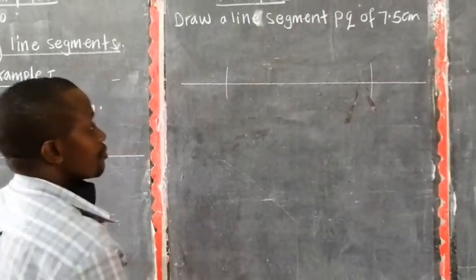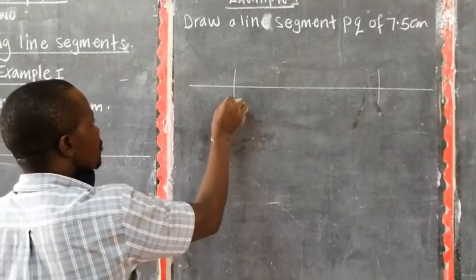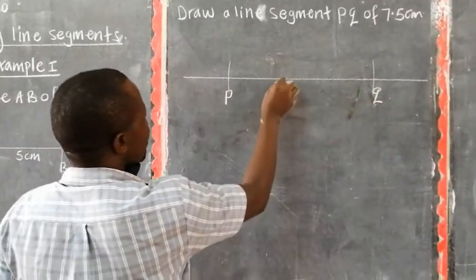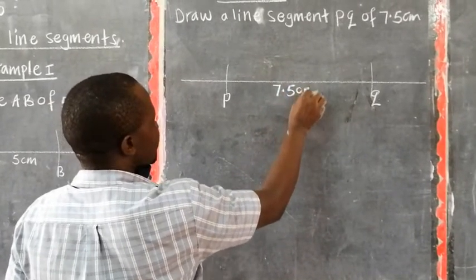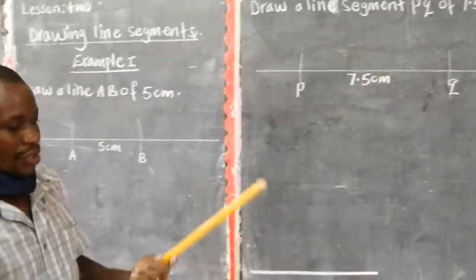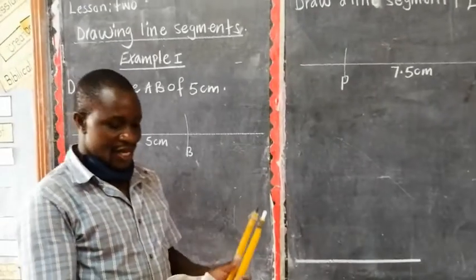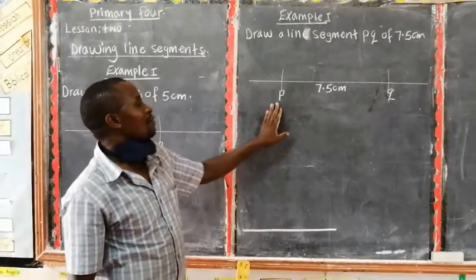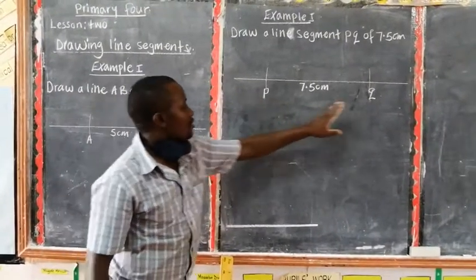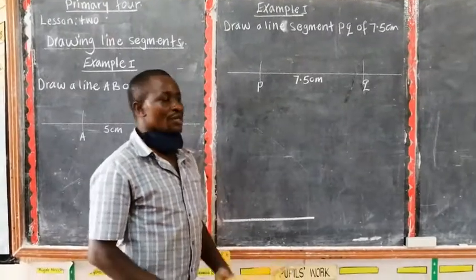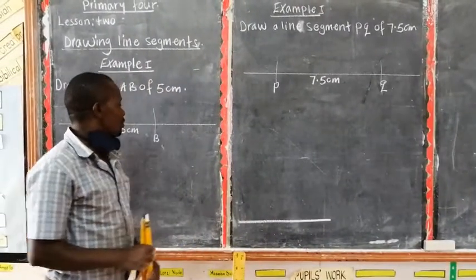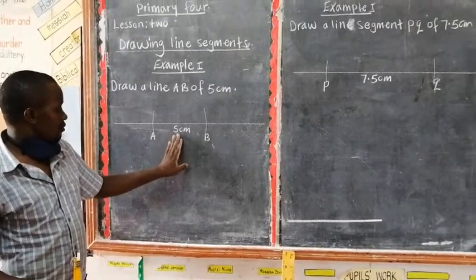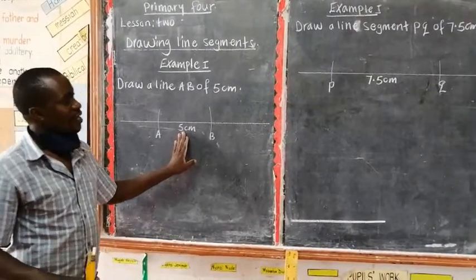Then write P and Q, and 7.5 centimeters. Drawing should be done with pencil, but writing should be done using a pen. So the activity is finished.